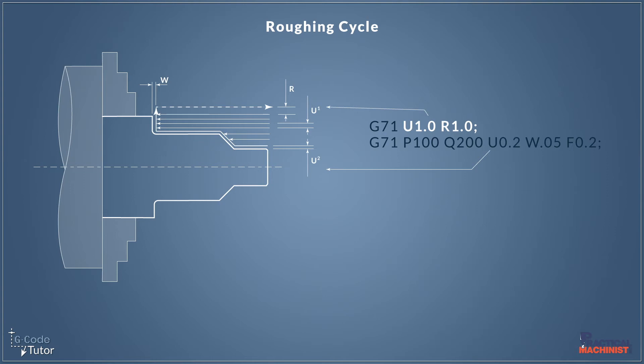That's followed by an R value, and I've also given a value of one millimeter. This is our retract value. This is how far the tool moves away from the part before it rapids back to the front of the job to take the next cut.